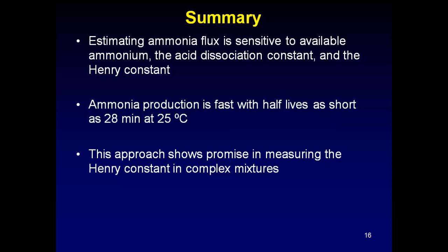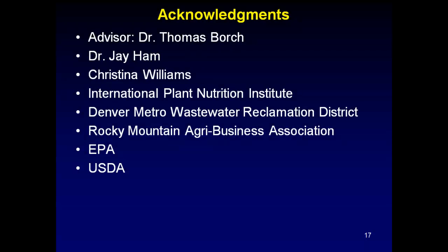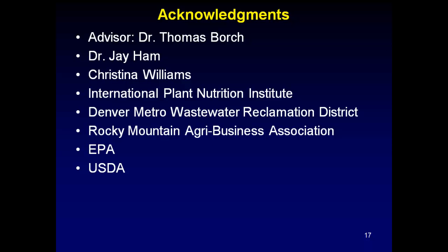The overall goal is estimating ammonia flux. We want to take a feedlot system, measure the available nitrogen, measure the pH, and estimate the ammonia flux from the system. However, estimates are very sensitive to these constants that we need to identify. We saw that ammonia production is still very fast even at low temperatures, with half-lives around 28 minutes at 25°C. This new system shows promise for measuring the Henry constant independent of the Ka values, even in complex mixtures. I'd like to acknowledge my advisor Thomas Bork, Dr. Jay Hamm, and Christina Williams, a research assistant. Any questions?